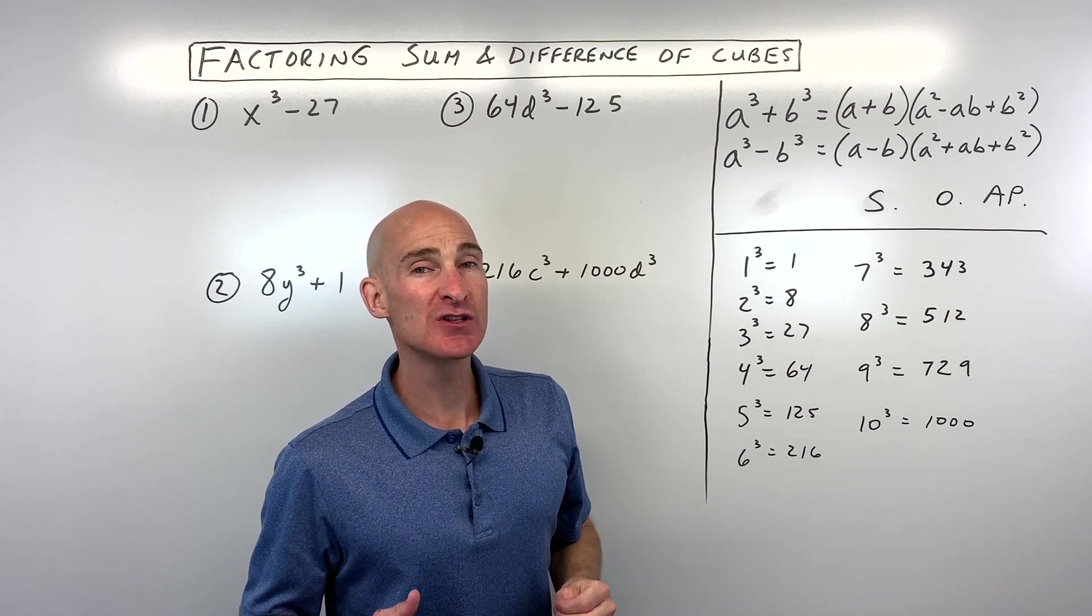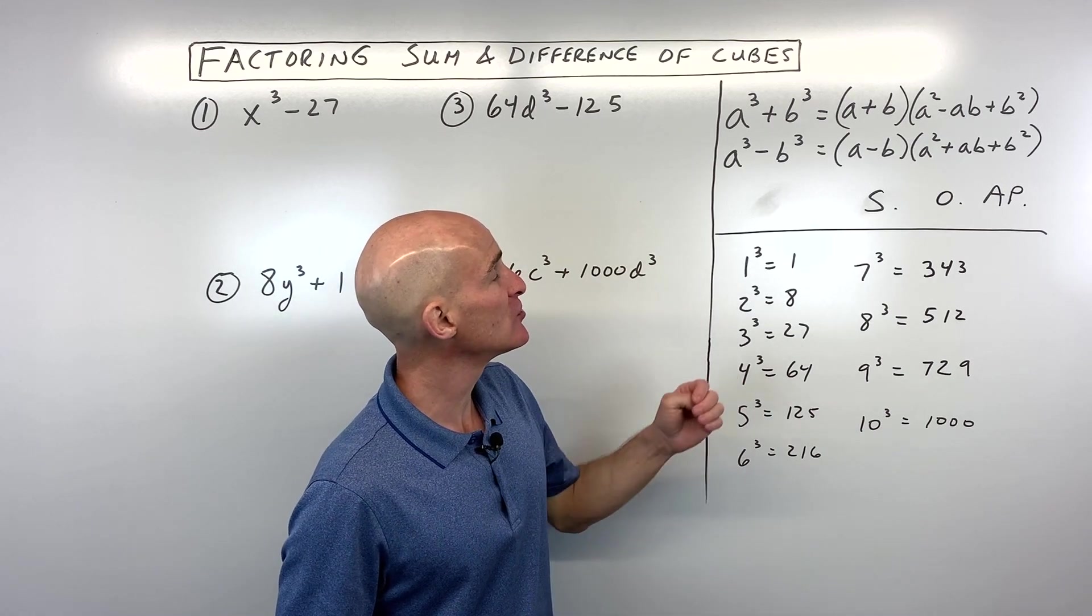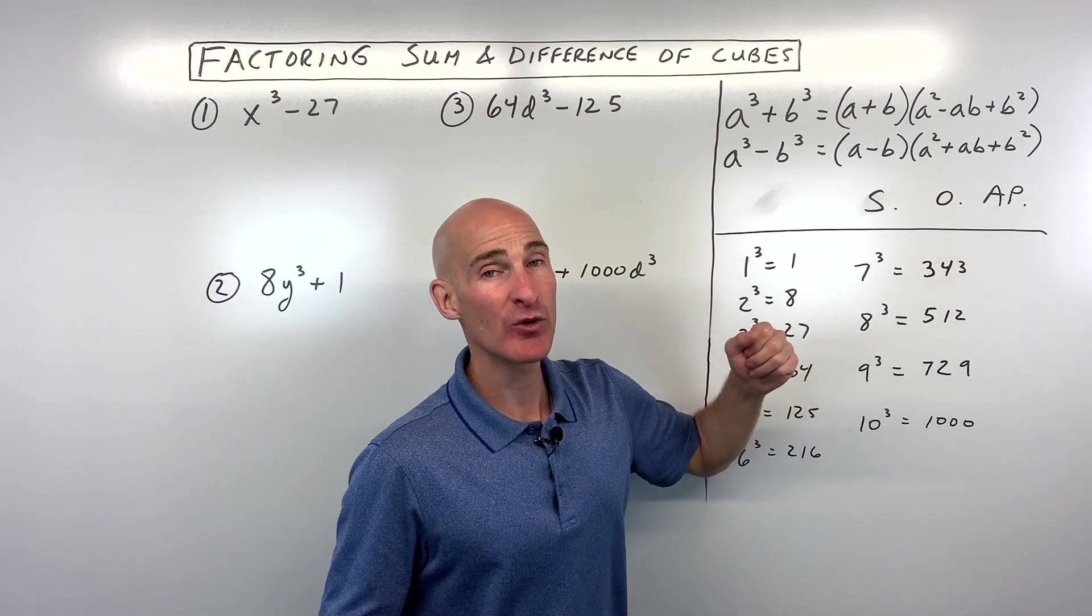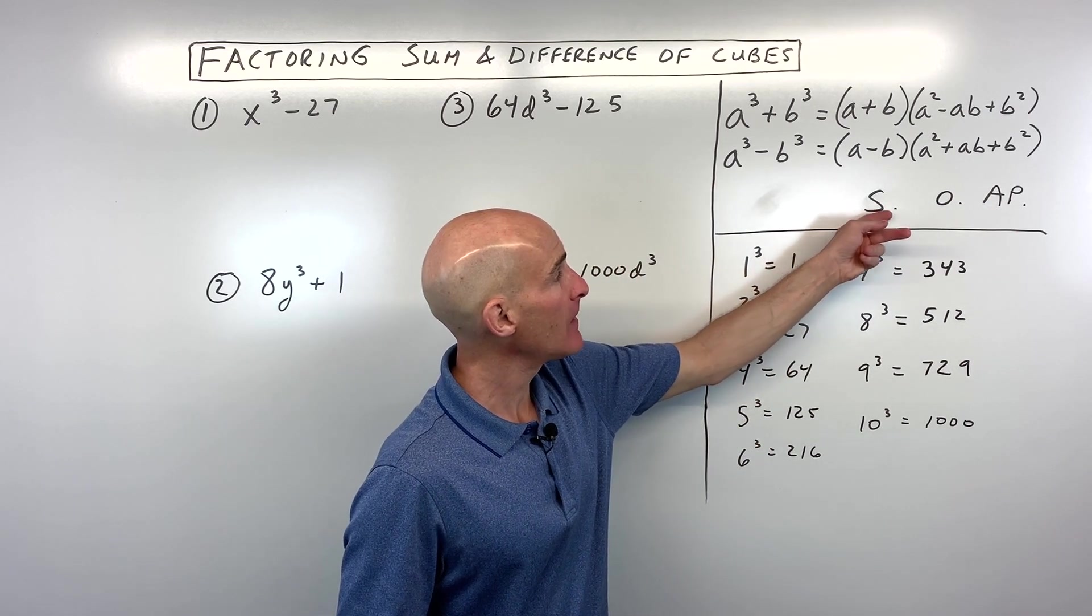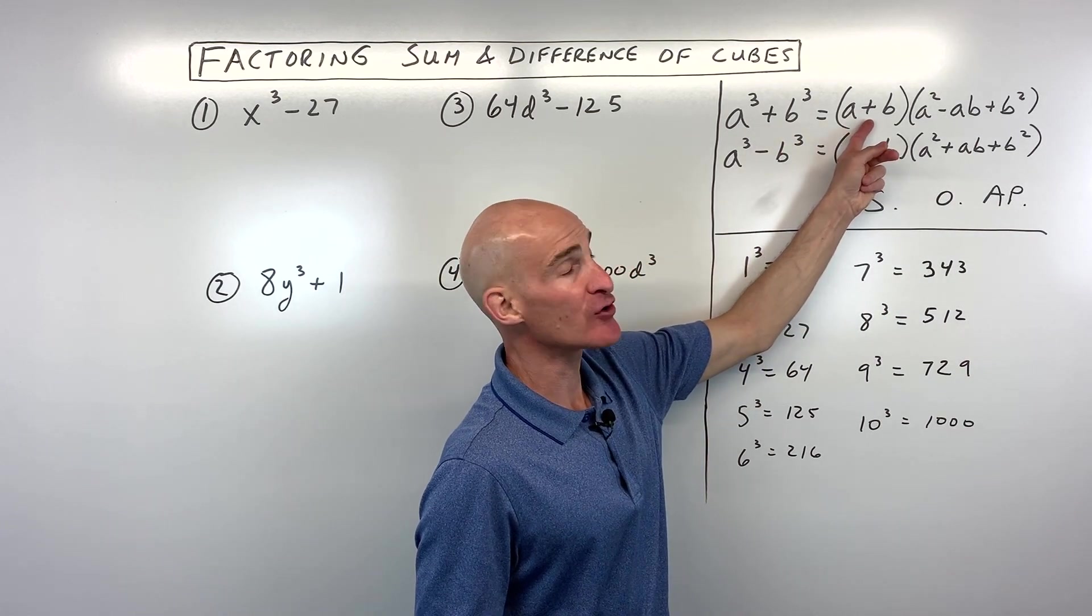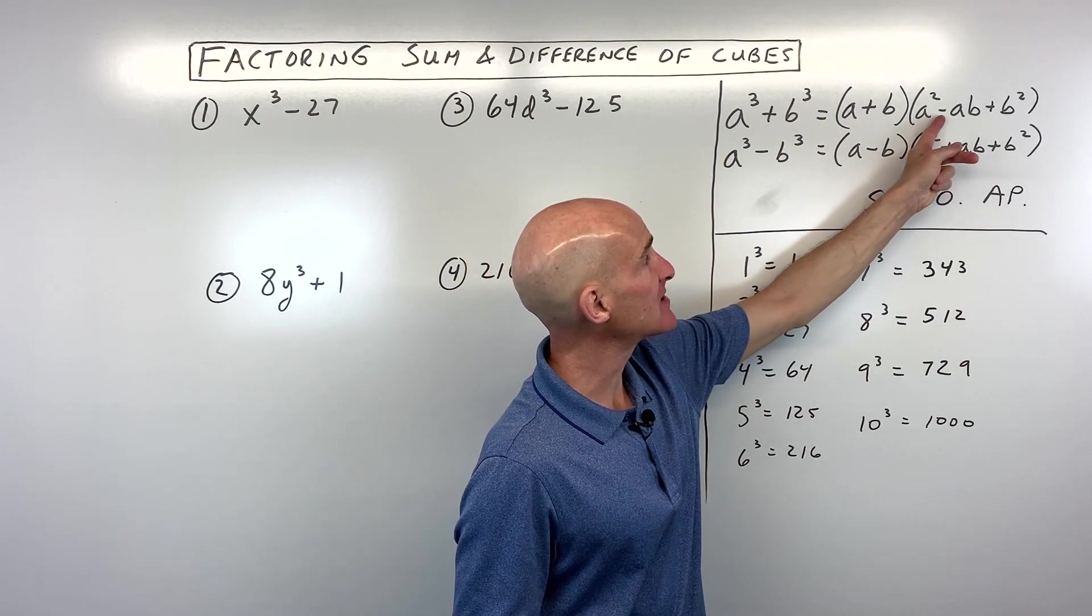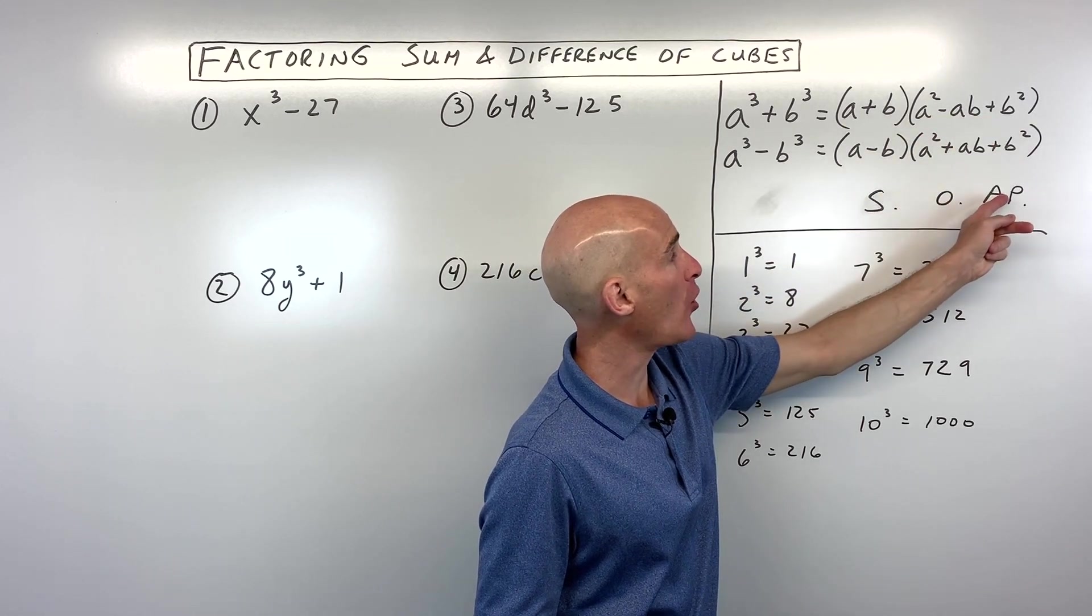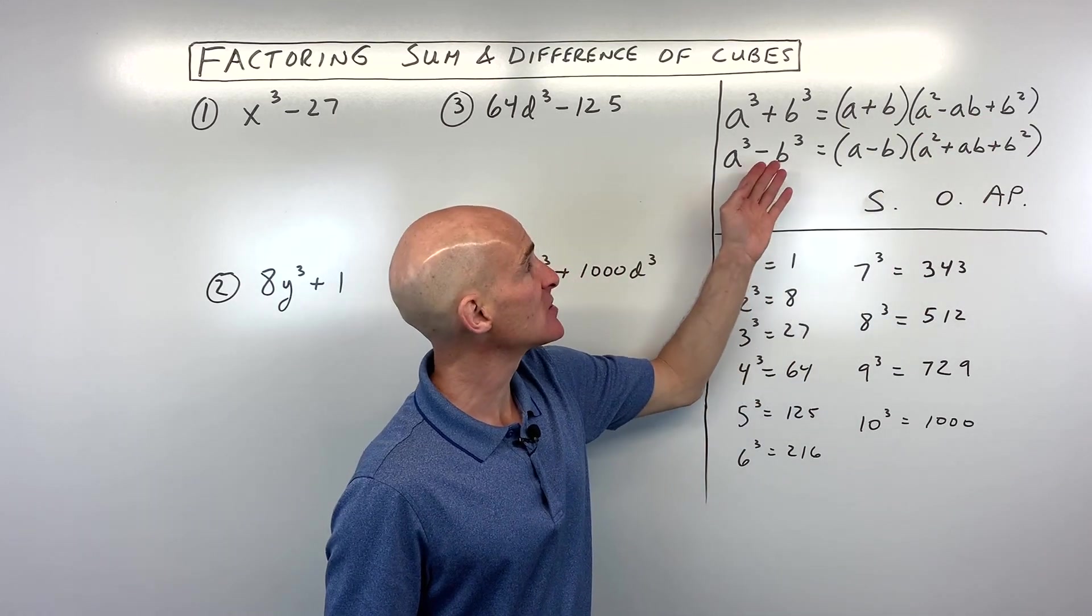The acronym that a lot of students memorize when they're learning sum of two cubes and difference of two cubes is this SOAP acronym. What it stands for is Same, Opposite, Always Positive. So if you're adding, this is the same. You're going to be adding. Then the next sign is going to be the opposite. You're going to be subtracting. And the last one is always positive.